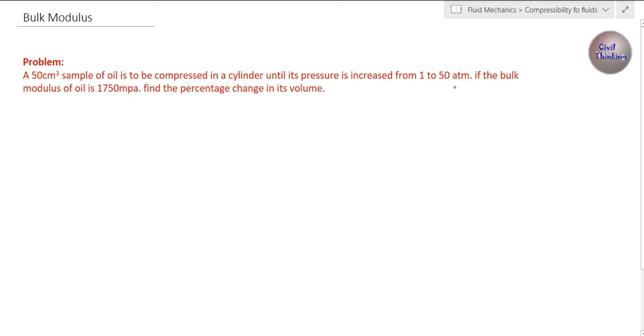We have to compress a fluid in a cylinder until its pressure is increased from 1 to 50 atmosphere. Initially the pressure P_initial was 1 atmosphere, then we increase the pressure P_final up to 50 atmosphere.